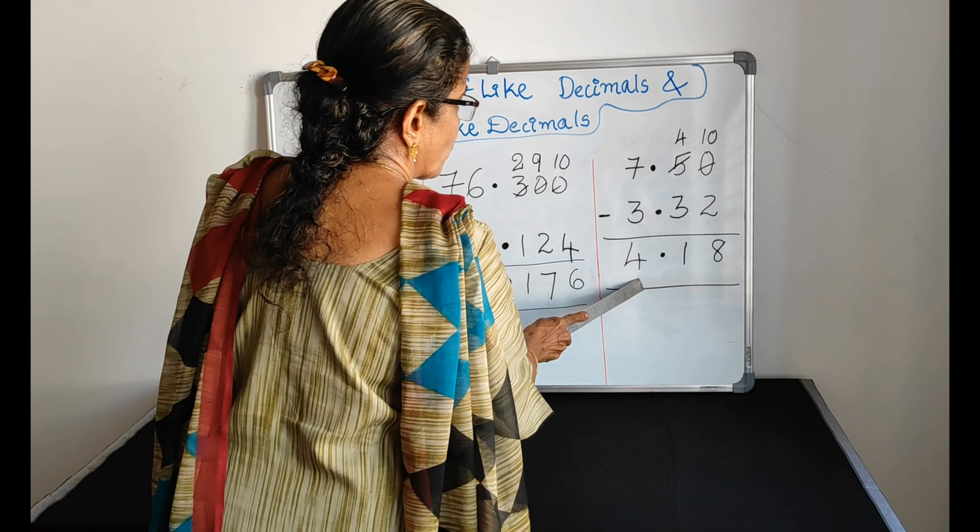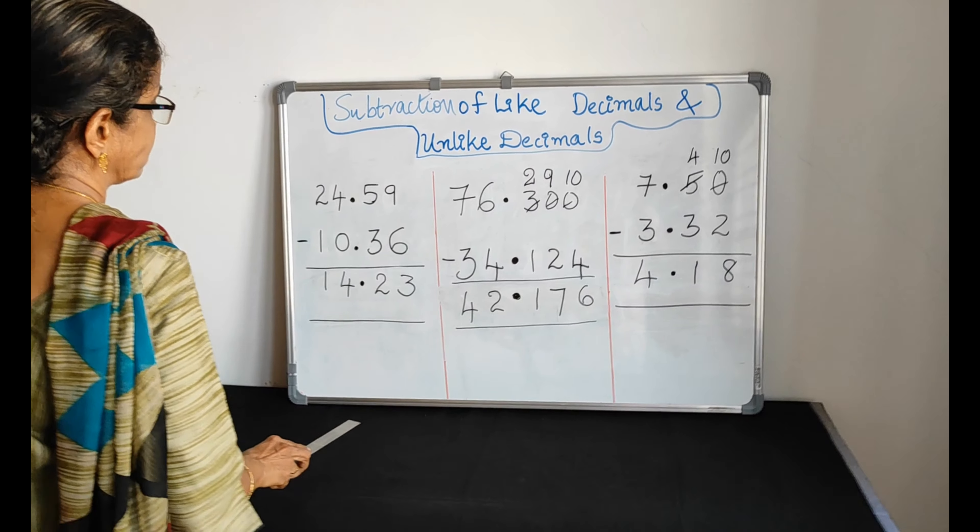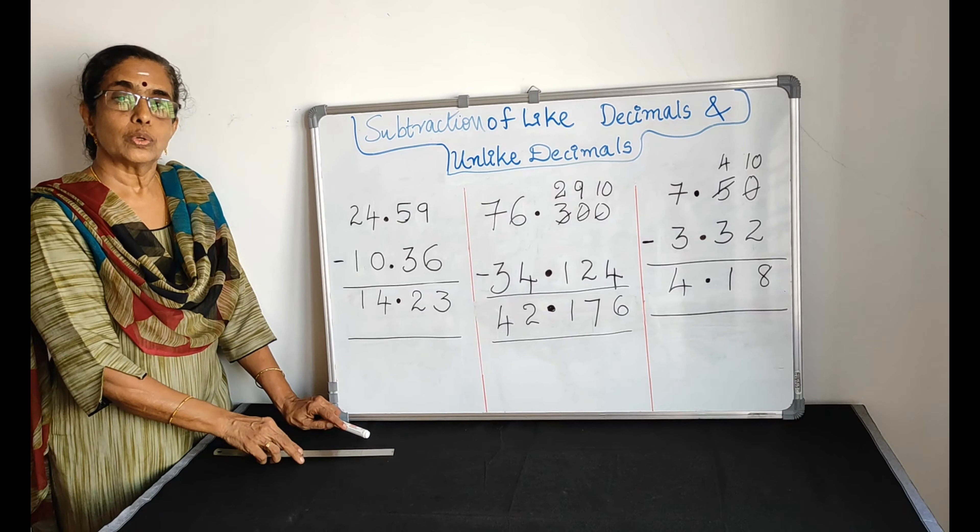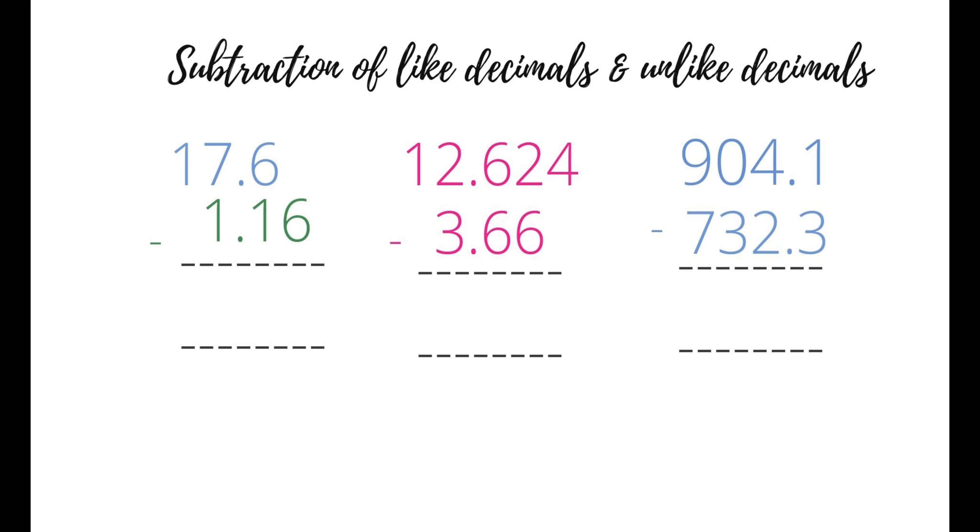So from the 5, we are taking 1. So 5 changes to 4. So that 1 comes here. It becomes 10. 10 minus 2, which is equal to 8.